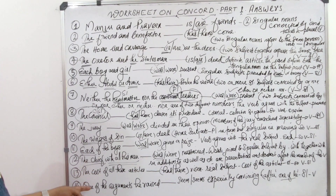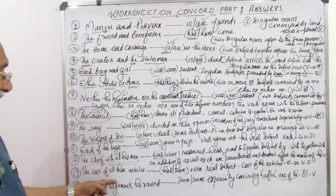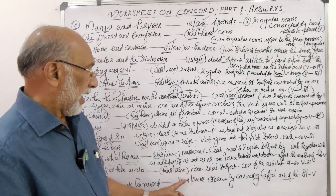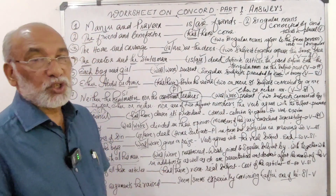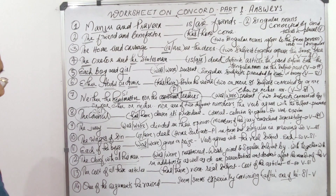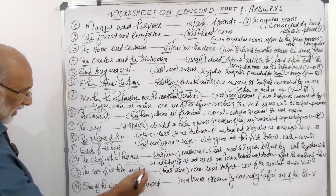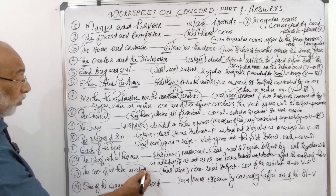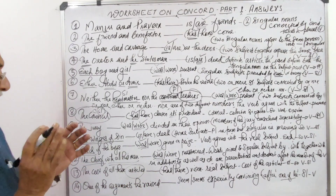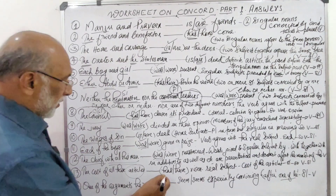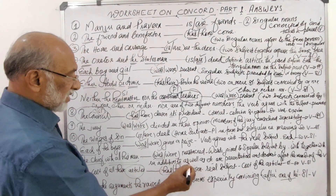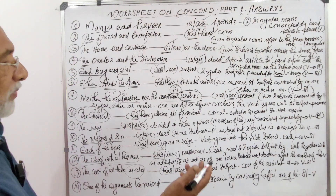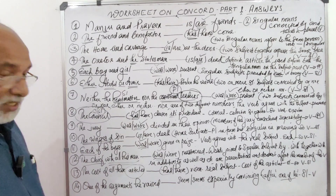Question 13: 'The cost of all these articles has/have risen.' The answer is 'has risen.' The real subject is 'cost.' Don't consider 'articles' independently — 'the cost of these articles' together gives a single idea, so the verb should be singular. 'The cost of the articles has risen' — real subject 'cost' is singular, so the verb is also singular.